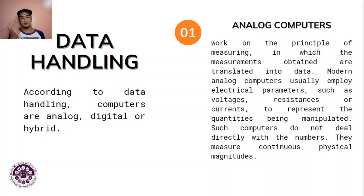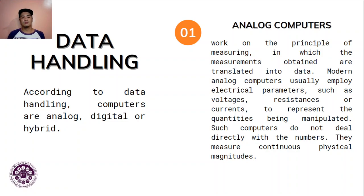Now let's talk about data handling. Computers can be analog, digital, or hybrid. Analog computers work on the principle of measuring, where measurements obtained are translated into data. Modern analog computers usually employ electrical parameters such as voltages, resistance, or currents to represent the quantities being manipulated. They do not deal directly with numbers — they measure continuous physical magnitude.